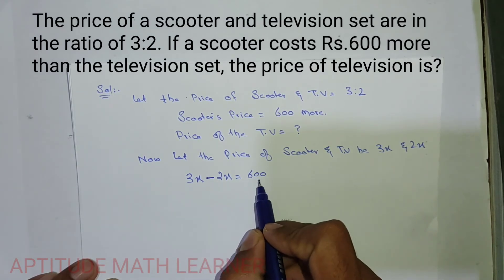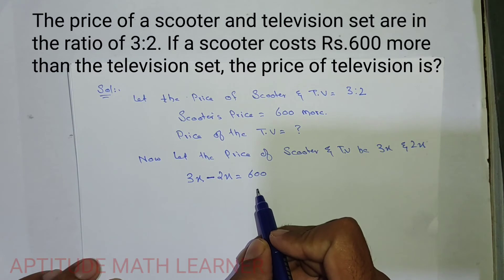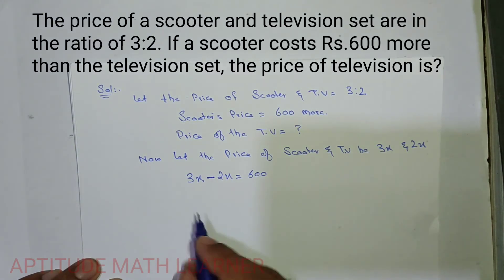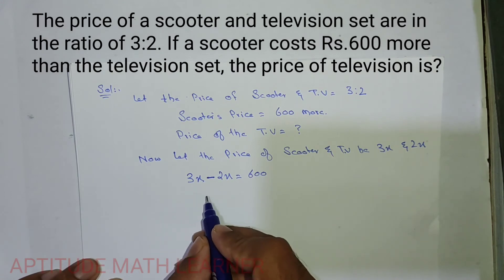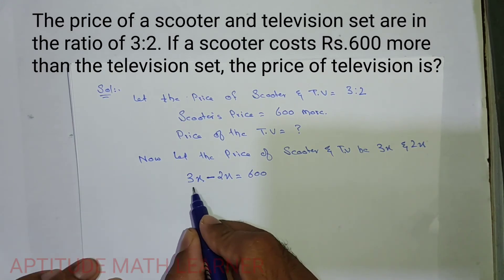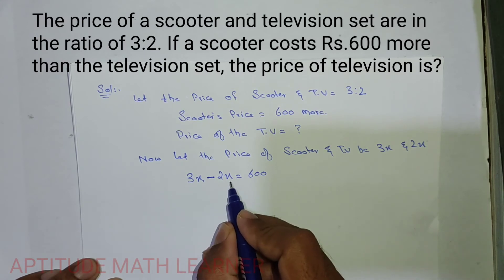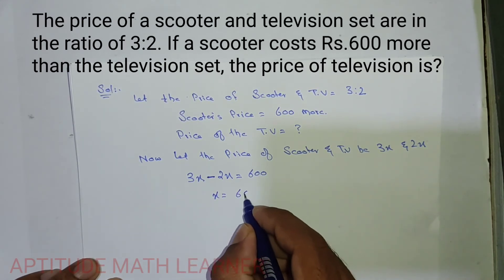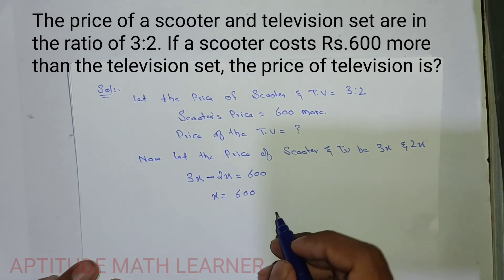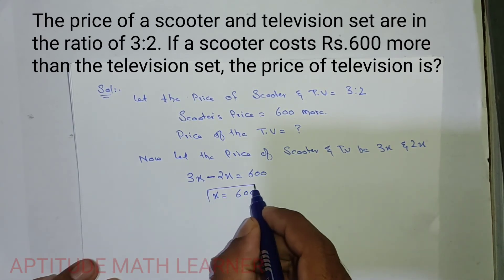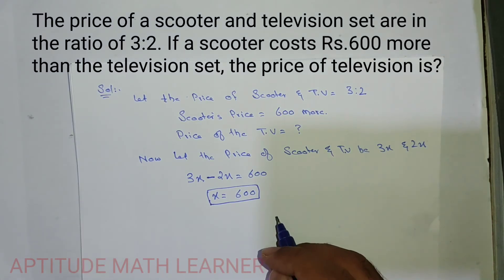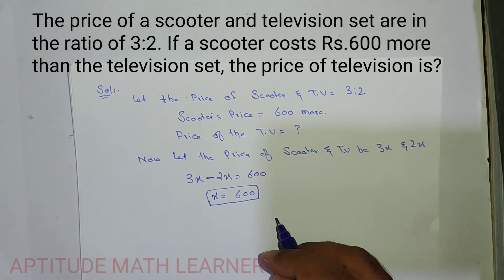The price of the TV is less than the price of the scooter by 600. By solving, we get the value of x: 3x minus 2x gives us x, and that equals 600. So we have found the value of x.